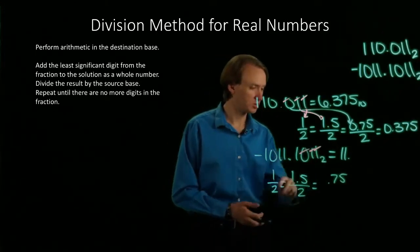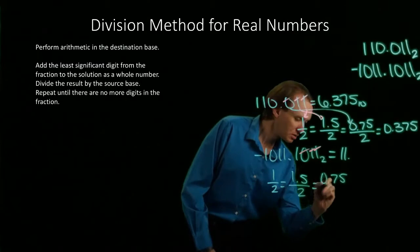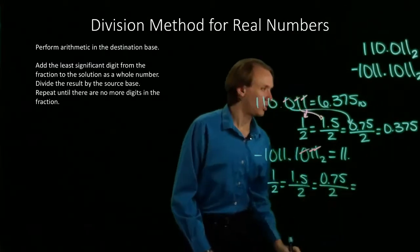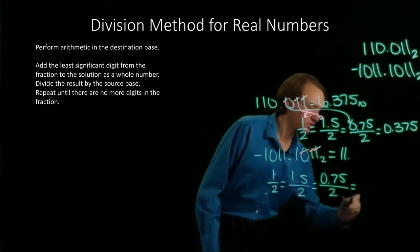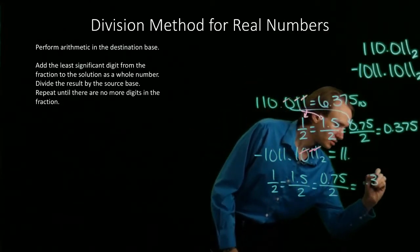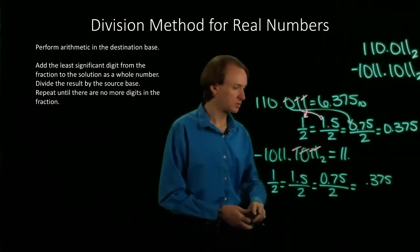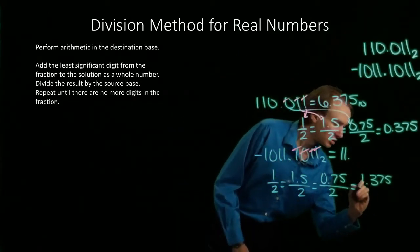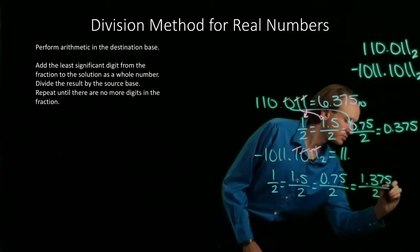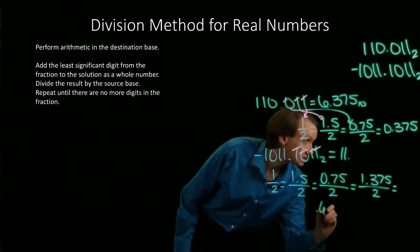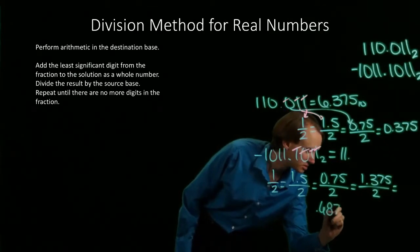Pull down this 0. Divided by 2. I'll get 0.375 again. Then I will pull down this 1. Divide this by 2. And this will give me 0.6875.